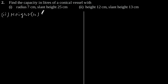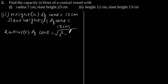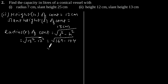Height h of cone is equal to 12 cm, slant height l of cone is equal to 13 cm. So radius r of cone will be square root of l squared minus h squared. Putting the values: square root of 13² minus 12², which equals square root of 169 minus 144, giving radius of cone as 5 cm.